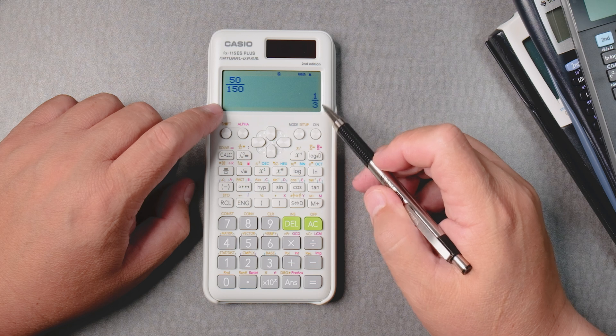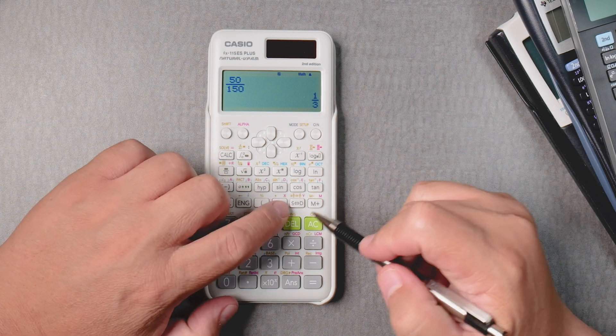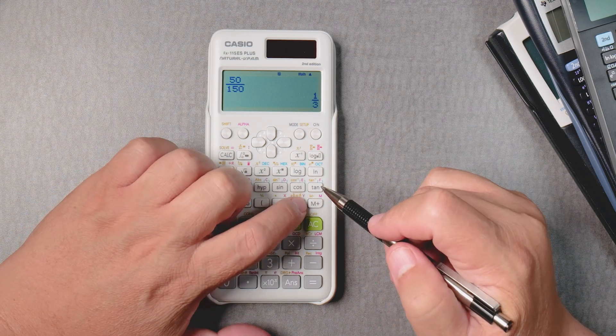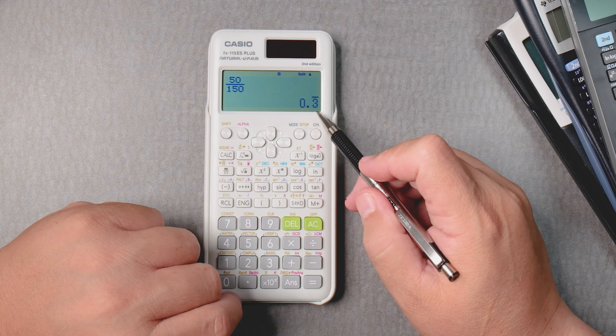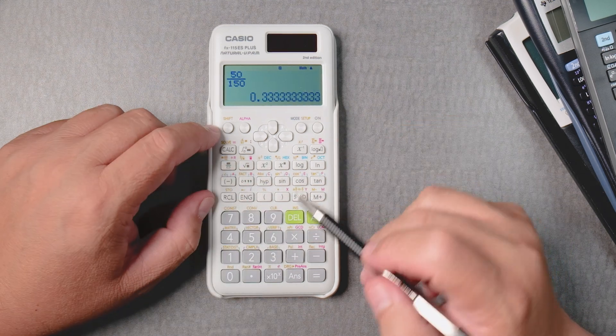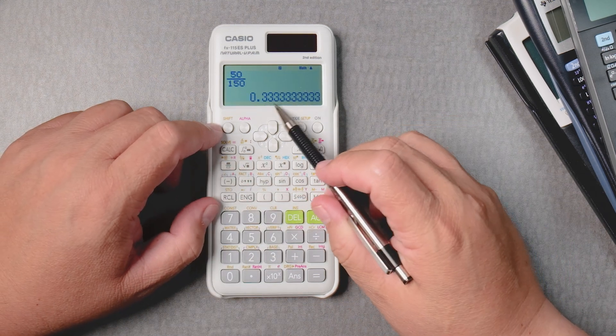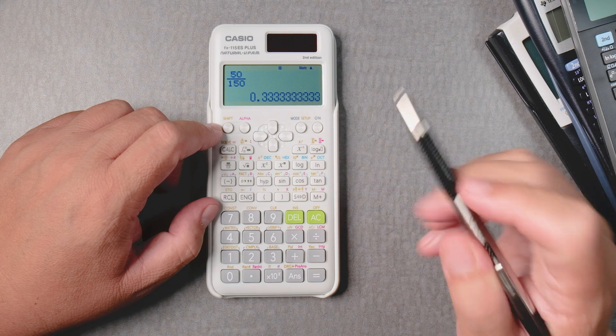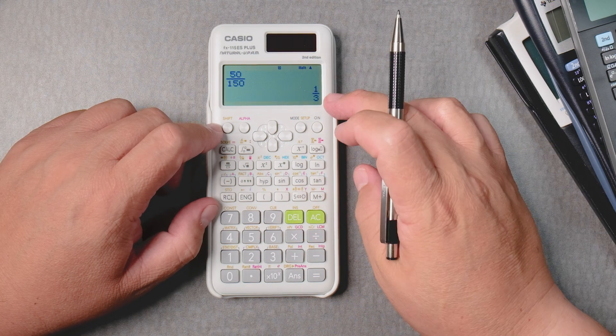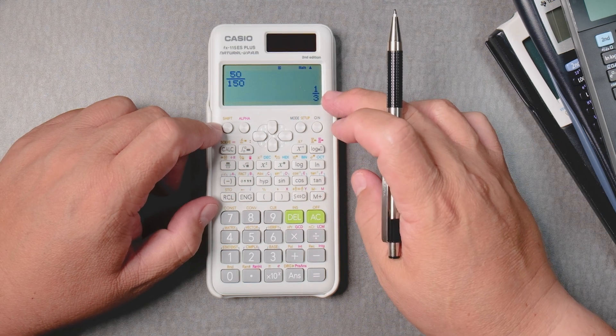Let's say I want this fraction and I want a decimal. We press the SD button, no shift. It gives you 0.3. Press it again. It gives you the more numbers out because it had that bar. If you press it again, it gives you the fraction.